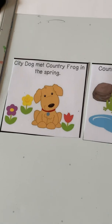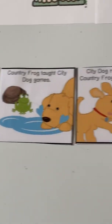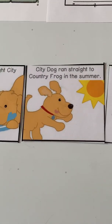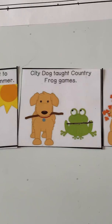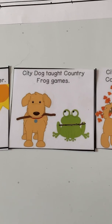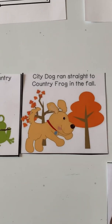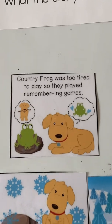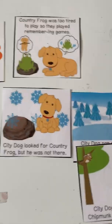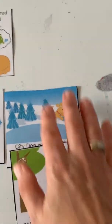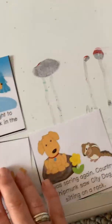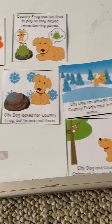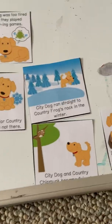So let's take a look at what we have so far. We have spring — they played games. Then it went to summer — they played games. Fall — then they remembered because they were tired. What happens after fall? What happens after fall? So we have spring, summer, fall, winter.